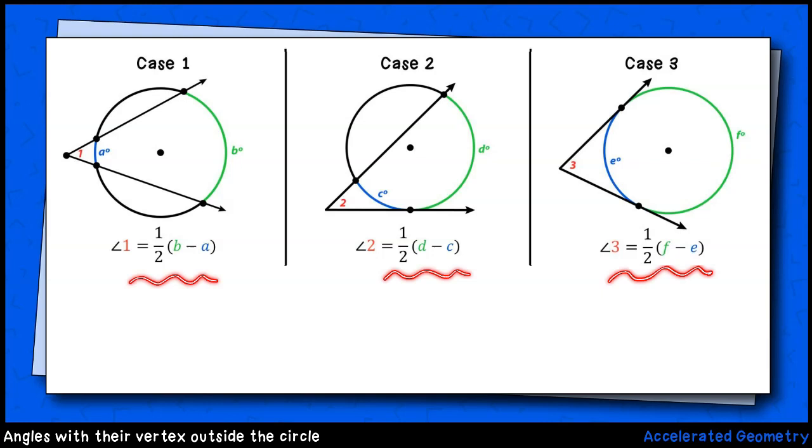What you'll notice, however, is that the pattern remains the same. The measure of the angle formed outside the circle will be half the difference of the two arcs intercepted by those secants and or tangents.